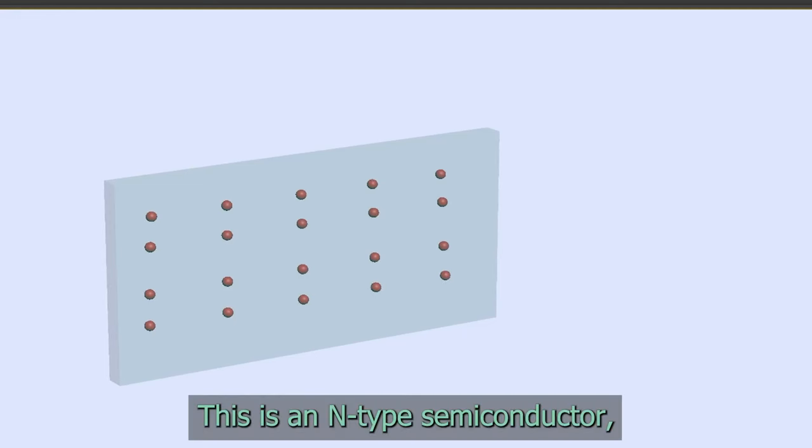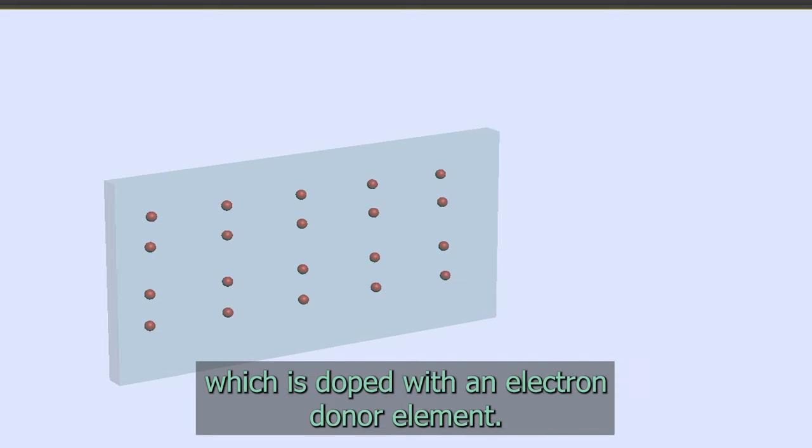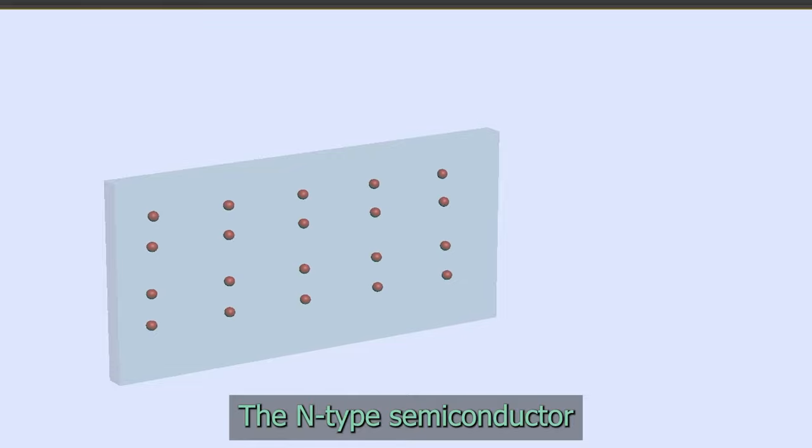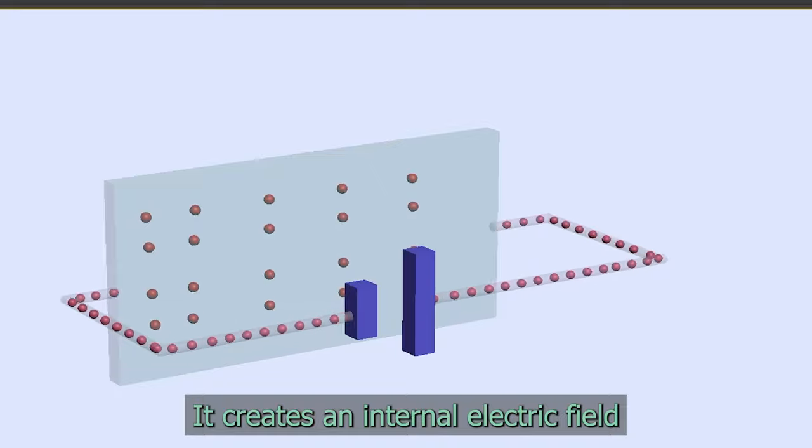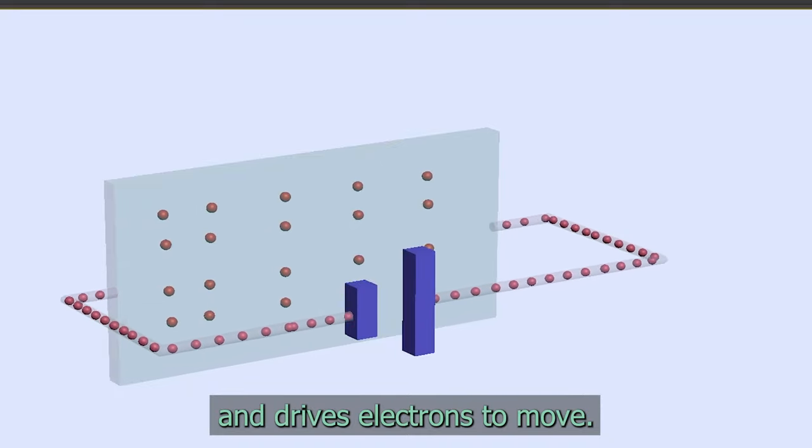This is an N-type semiconductor, which is doped with an electron donor element. The N-type semiconductor is firstly connected with a current source. It creates an internal electric field and drives electrons to move.